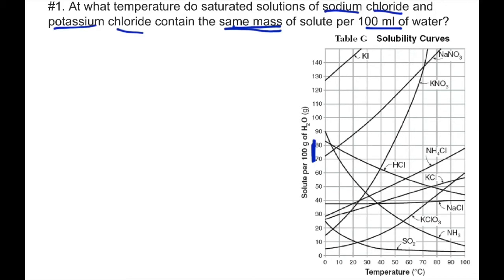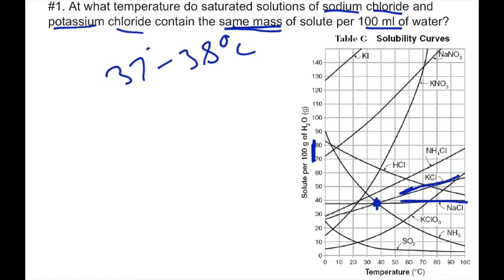We find sodium chloride — NaCl — on Table G and move along the line. The question asks about the same mass, so we expect the NaCl line and the KCl line to intersect at some point. Moving along both lines, the intersection takes place around here — approximately 37 to 38 degrees C. If a question like this gives you a small range of 2 or 3 degrees, don't panic — that's your answer.